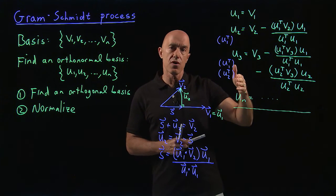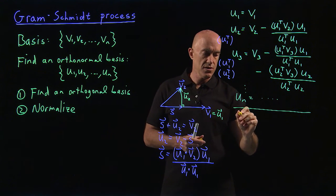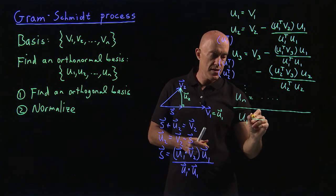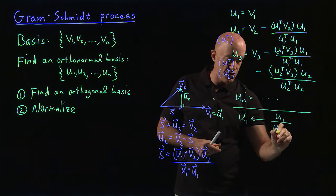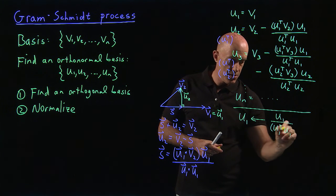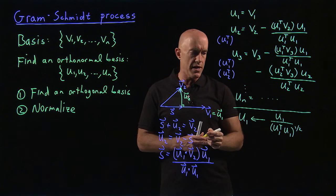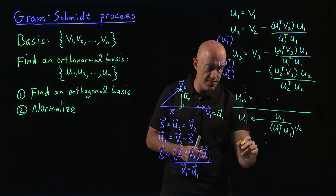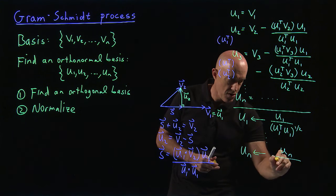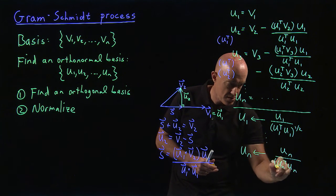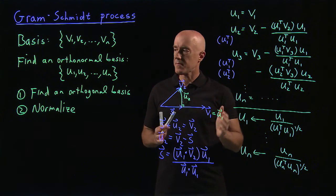That gives us step one. This will then be an orthogonal basis. And then to make it orthonormal, we just normalize each vector. So U1 then to normalize. That will take the value of U1 here. And then we divide by U1 transpose U1 to the one-half power. And you can see that the norm of U1 then will be 1. And then we keep doing them for all of them until we get the last one. We'll take the value of UN over UN transpose UN to the one-half power. So the normalization step is quite simple.